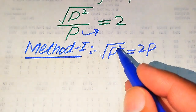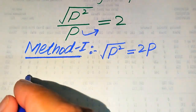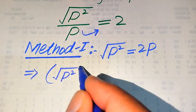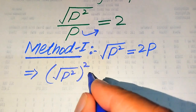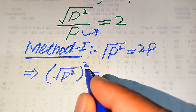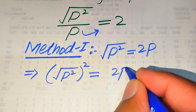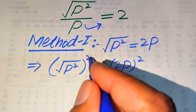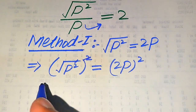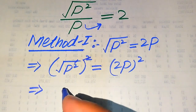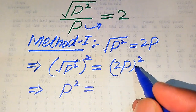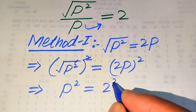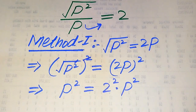In the next step, we need to remove the square root sign. To do so, we square both sides. We write (√(p²))² = (2p)². The square and square root cancel out on the left, giving p². On the right, we apply the square separately to both values, getting 2² multiplied by p².